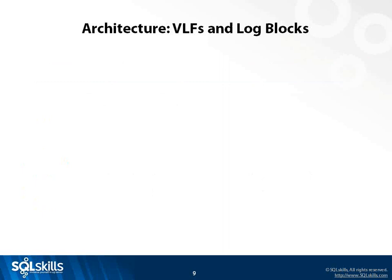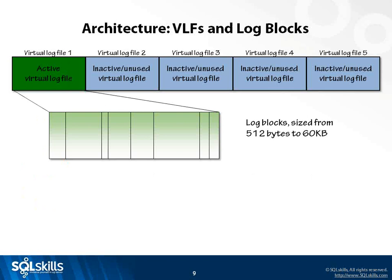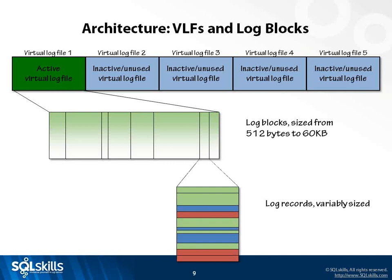Going a little deeper — inside each VLF there's a series of what are called log blocks, and the log blocks are what hold the log records. The log blocks initially start off at 512 bytes each and they grow up to a maximum size of 60 kilobytes each. There are varying sizes of log blocks, and when a log block reaches whatever size it's going to reach, it has to be flushed out to disk. You can think of a log block as kind of equivalent to a database data file page, although data file pages are fixed size at 8K.